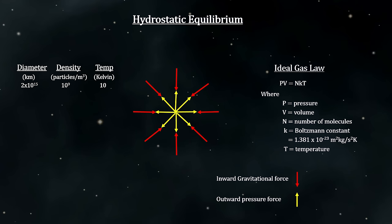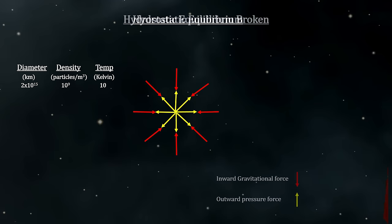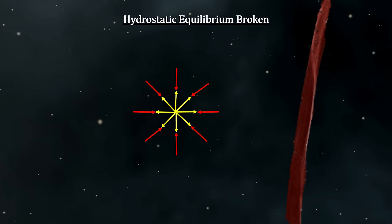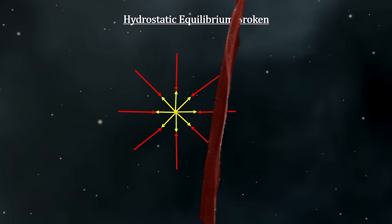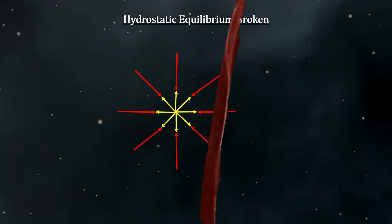We don't know what triggers a collapse. One thought is that it happens when clouds collide with other clouds. Another theory has it that supernova remnant wave fronts can do it. Here, we see the remnant exert a force that compresses a cloud to the point where it creates an imbalance in the gas pressure versus gravitational force in favor of the gravitational force.